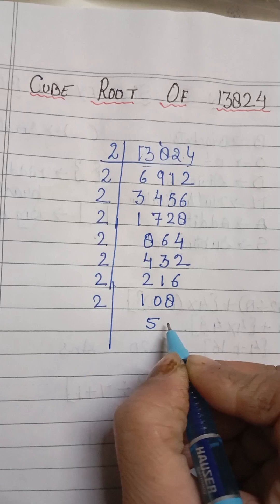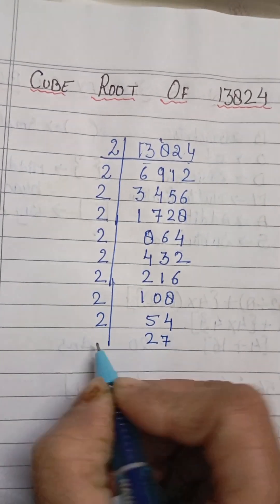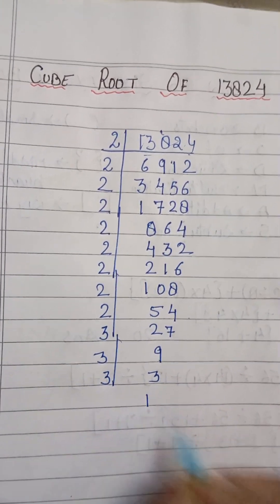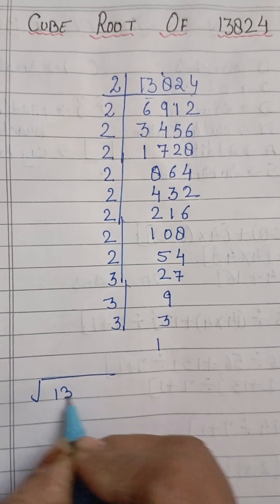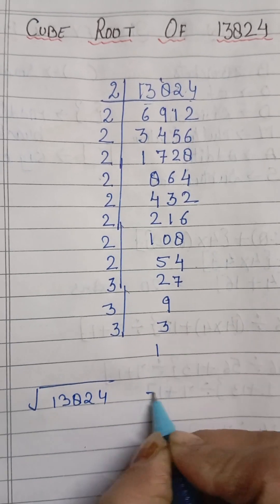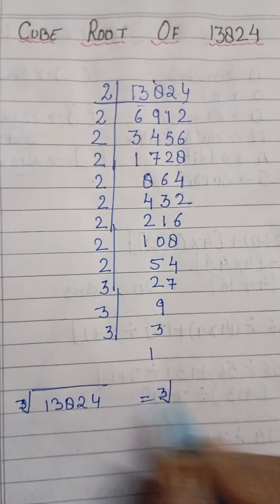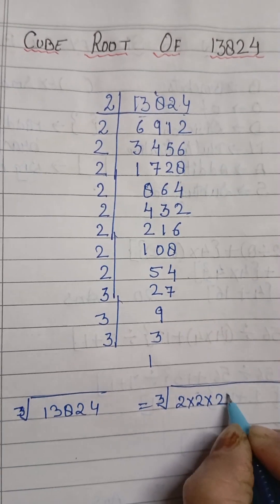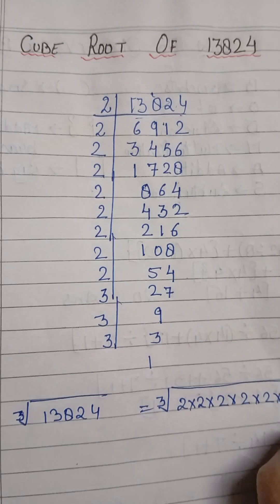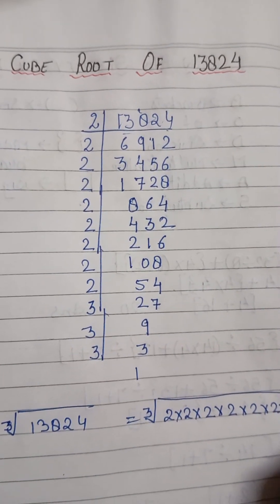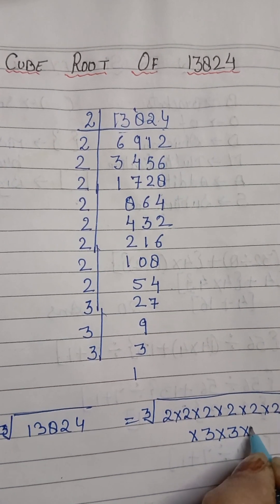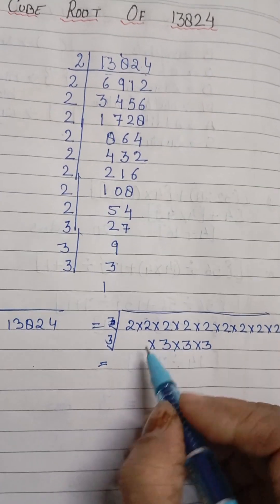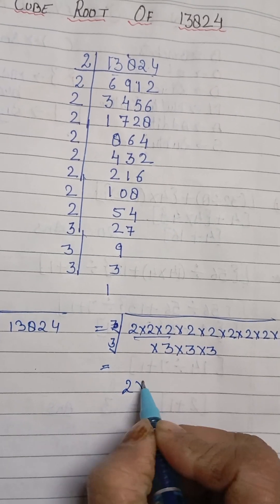Now, 13,824. 13,824. And cube root of 2 times 2 times 2 times 2 times 2 times 2 times 3 times 3 times 3.